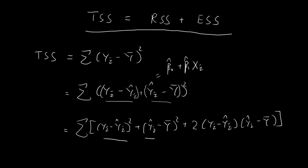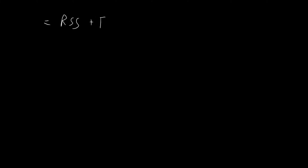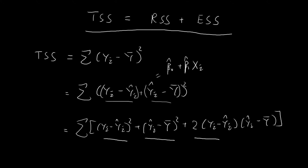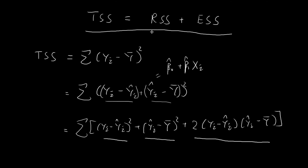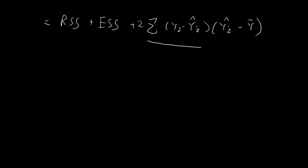The second term — the sum of (ŷᵢ minus the sample mean of y) squared — is just the definition of the explained sum of squares. Finally, we have the cross-product term: plus two times the sum of (yᵢ minus ŷᵢ) times (ŷᵢ minus the sample mean of y). I'm trying to prove that TSS equals RSS plus ESS, so you would expect this cross-product term to be equal to zero. That's what we're going to focus on for the rest of this video.